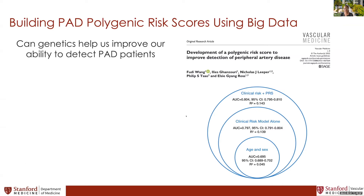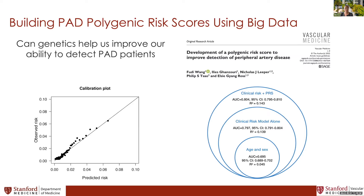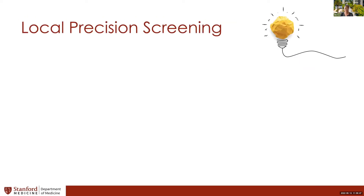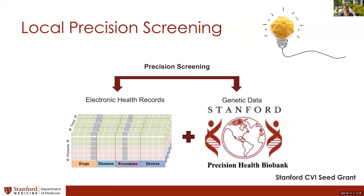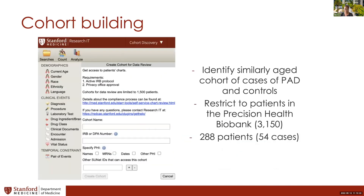Since we have some genetic data at Stanford and a phenomenal EHR resource, maybe we can combine these datasets. This would allow me to build models that leverage both data types to improve detection of PAD — and maybe detect patients before diagnosis to get even earlier on treatment. This started with building a cohort through manual chart review using a GUI that makes reviewing patient charts much easier than logging into Epic manually.